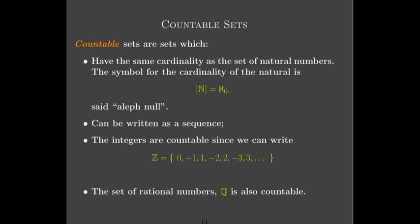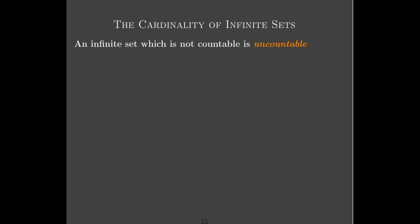It turns out that the integers are countable — we can arrange them in such a way that they are in one-to-one correspondence with the natural numbers. And we can do the same thing with the rational numbers. So it turns out that even though there are integers which are not natural numbers, the cardinality of the integers is the same as the cardinality of the natural numbers. Things get a little bit mind-bending when we start talking about infinite sets and transfinite numbers.